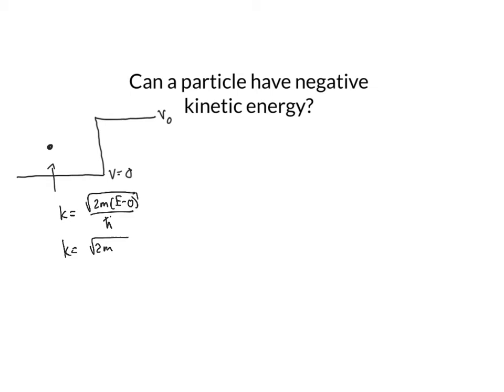So k is just equal to square root of 2mE over ℏ, and that's a region where we have only kinetic energy. The wave vector is related to the total energy, which is just kinetic energy.